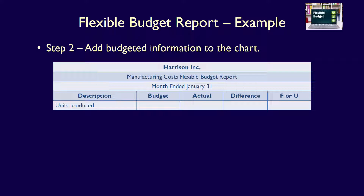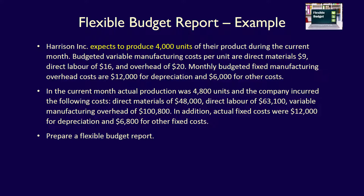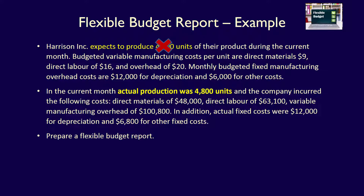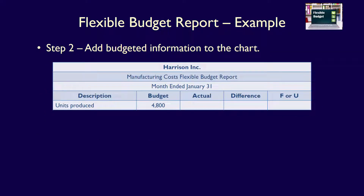The budget was originally prepared for a production volume of 4,000 units. Is this the level of activity we want to use for our flexible budget? The answer is a hard no. A flexible budget is adjusted for different levels of activity so that it can adapt to changes in operations. It recognizes that variable costs change with the level of activity, and in order to appropriately assess those costs, we need to use the level of activity from the actual results — that is, actual production of 4,800 units. So in the budget column for units produced, we use 4,800 units, the actual level of activity.